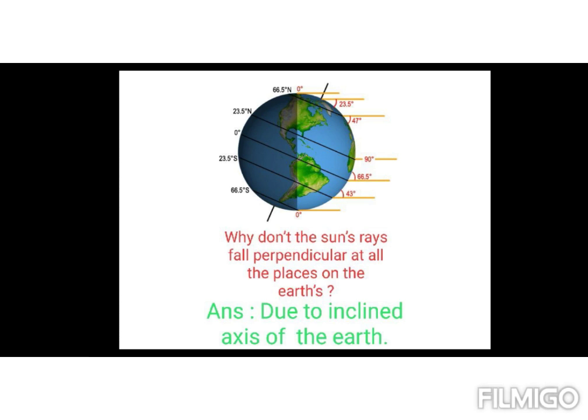Why doesn't the Sun rise fall perpendicular at all places on the Earth? It is due to the inclined axis of the Earth.